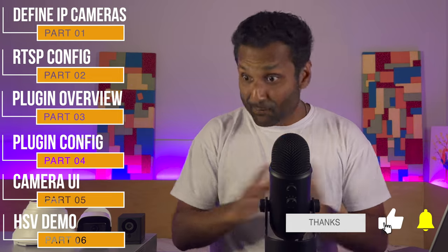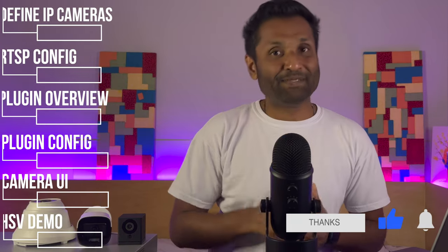I've already broken the video down into six parts with timestamps in the description. They are: one, define which IP cameras work with HomeKit Secure Video to set the baseline; two, look into generic camera RTSP configuration from the plugin overview; three, go into the plugin configuration; four, a quick overview of the Camera UI dashboard; and five, a HomeKit Secure Video demo. So let's not waste any more time and jump into this tutorial.